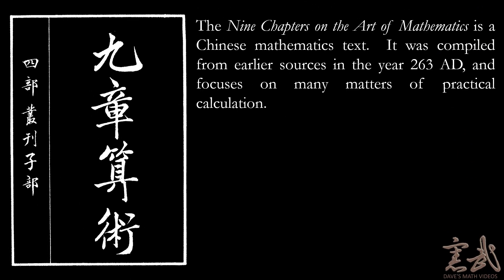Now let's take a look at the question. This question comes from a text known as the Nine Chapters on the Art of Mathematics, which is a textbook from ancient China. It was compiled from sources in the year 263 AD, and it mostly focuses on matters of practical calculation, things like calculating the price of commodities or finding out the area of a field.